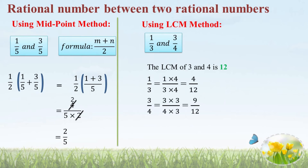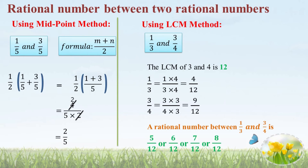Multiply 1 by 3 by 4 by 4 to get 4 by 12. Next, multiply 3 by 4 by 3 by 3 to get 9 by 12. Now both numbers have the common denominator 12. Compare the numerators: 4 and 9. The numbers between 4 and 9 are 5, 6, 7, 8. The question asks for only one rational number between 1 by 3 and 3 by 4. We can take any: 5 by 12, 6 by 12, 7 by 12, or 8 by 12.